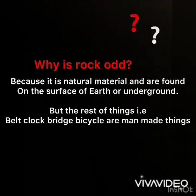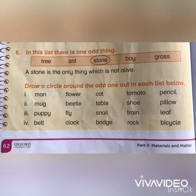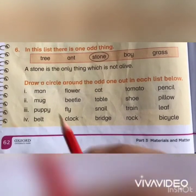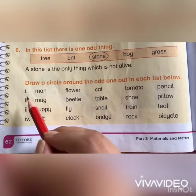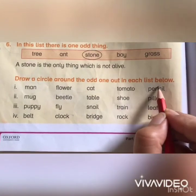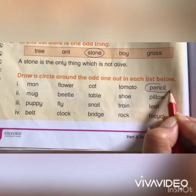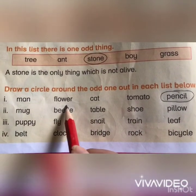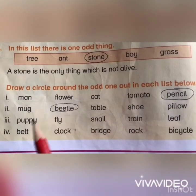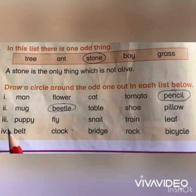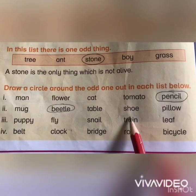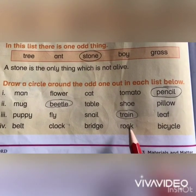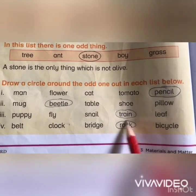Now that we know which one is the odd one out in each list, let's circle those things. In the first list the odd one is pencil — circle pencil. In the second list the odd one is beetle — circle beetle. In the third list the odd one is train — circle train. In the fourth list the odd one is rock — circle rock.